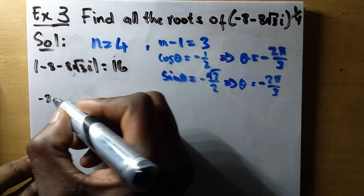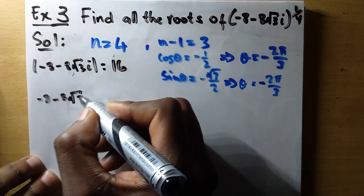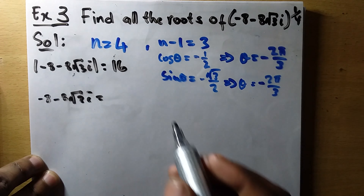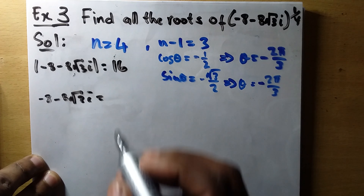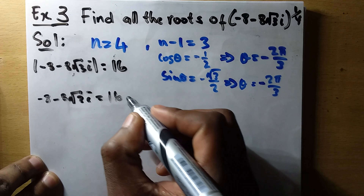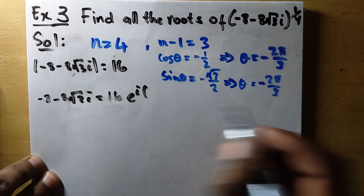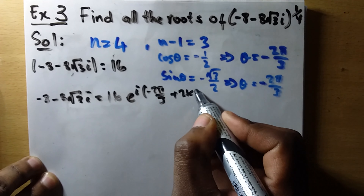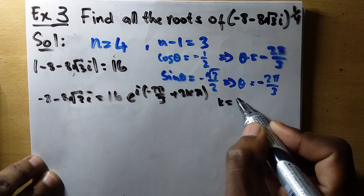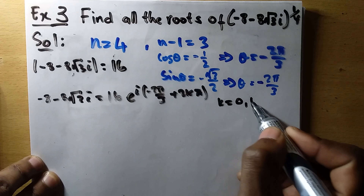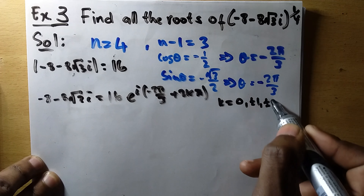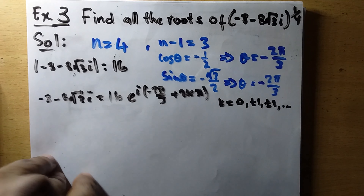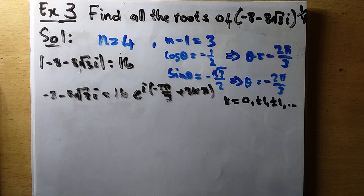So -8 minus 8√3·i equals 16·e^(i(-2π/3 + 2kπ)), where k = 0, ±1, ±2, and so on. This is the exponential form with the general angle including all rotations.